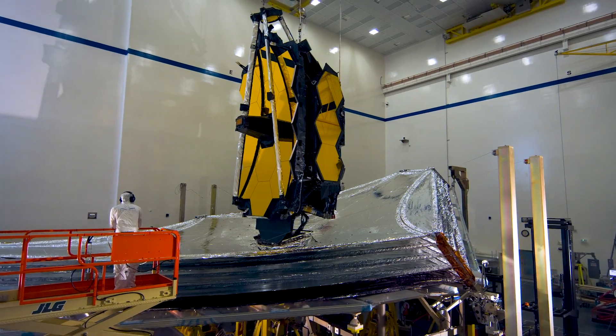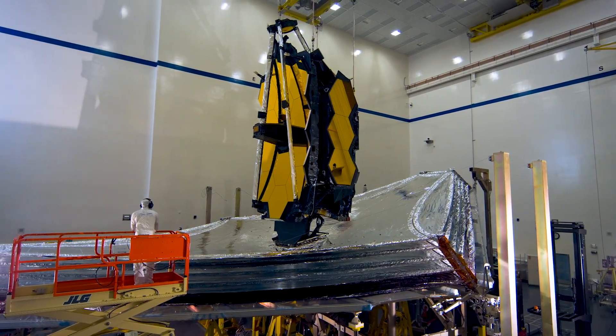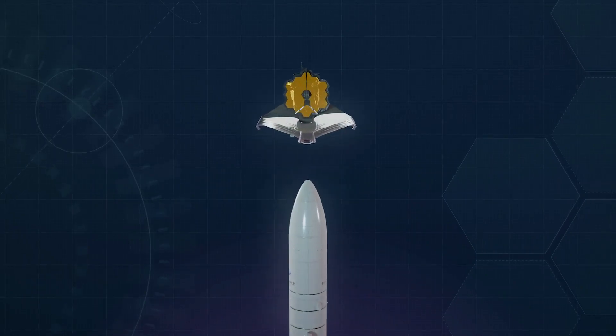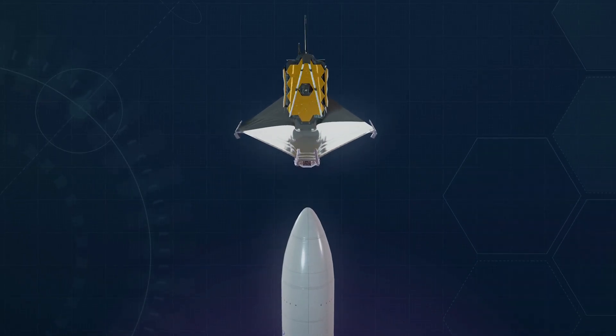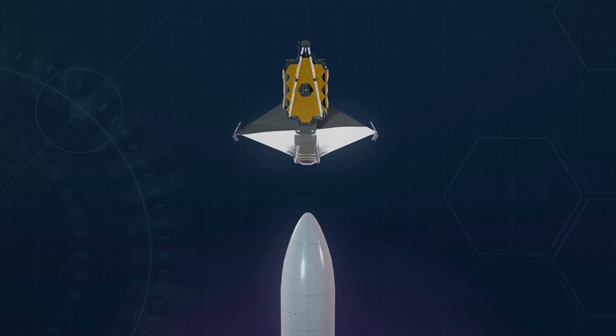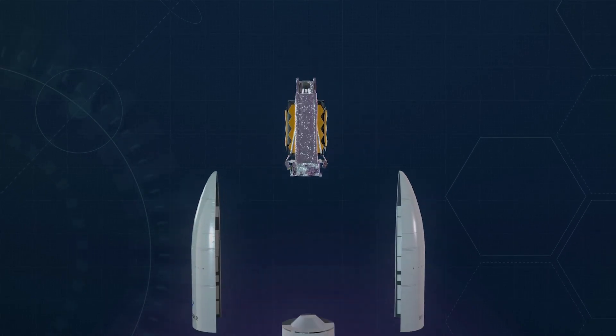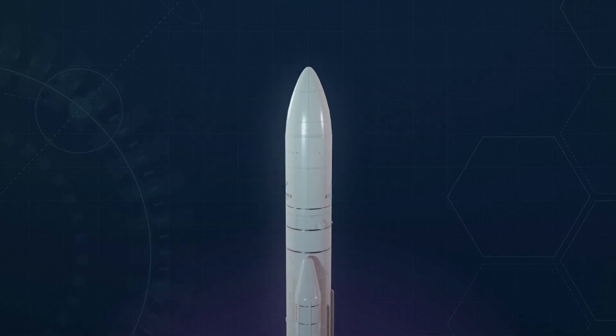Launching such a large telescope into space is an incredible engineering challenge. Fully deployed, Webb is too large to fit inside any rocket fairing. Engineers designed it to be folded, like origami, to squeeze inside the European Space Agency's five-meter diameter Ariane V rocket fairing.